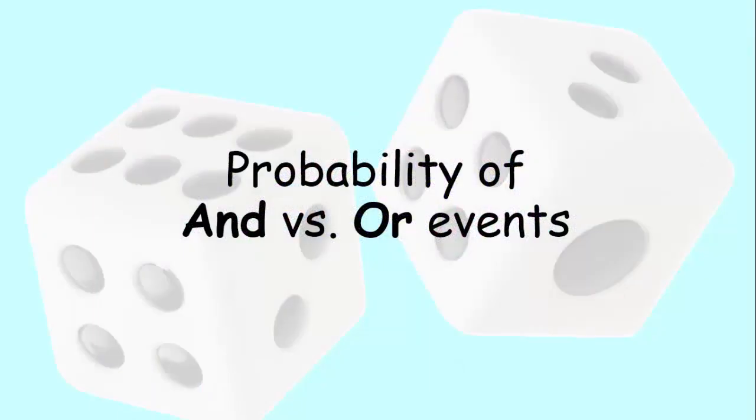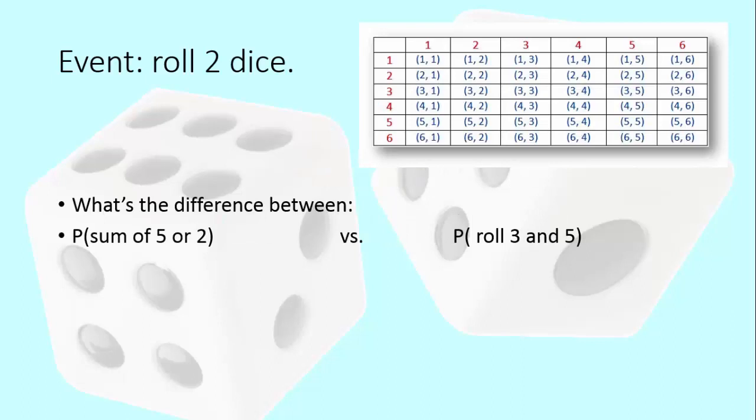Probability of and versus or events. Here's a common event, roll two dice. So I've got a sample space up there that shows all the outcomes, but I'm going to ask two different kinds of questions about this. The first one is what's the probability of sum of five or two versus what's the probability of rolling a three and a five?